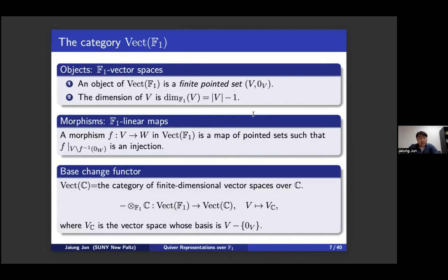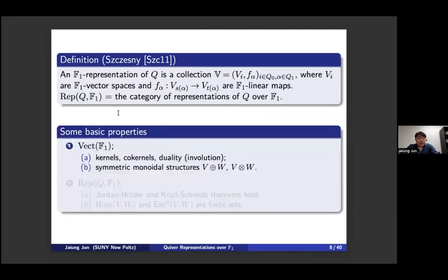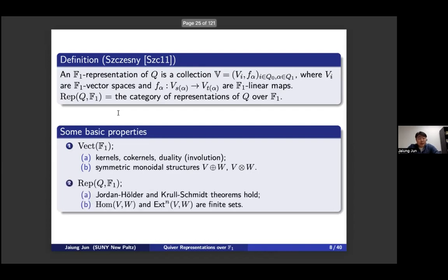The base change functor uses an F1 vector space as a basis to define a complex vector space, or a vector space over any field. An F1 representation of a quiver places an F1 vector space at each vertex and an F1 linear map at each arrow. F1 vector space maps have kernels and a duality, and two symmetric monoidal structures: direct sum and tensor product. The F1 representation category satisfies a Jordan–Hölder theorem and Krull–Schmidt theorem, and hom-sets and extension spaces are finite sets.